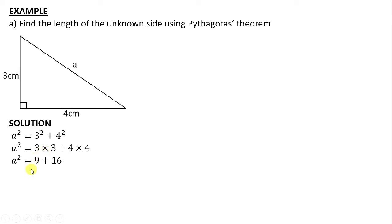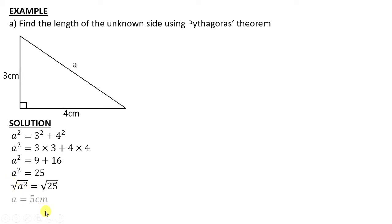When you multiply 3 by itself you get 9. Multiply 4 by itself twice you get 16. Nine plus sixteen gives us 25, so a squared is equals to 25. From here introduce the square root on both sides so that we remain with a to the power one. We know that the square root symbol means power half. Which number are you supposed to multiply by itself twice to get 25? Five. Therefore a is equals to 5 centimeters.